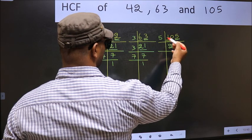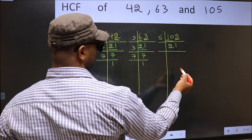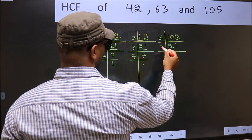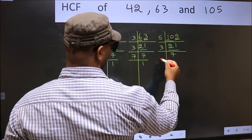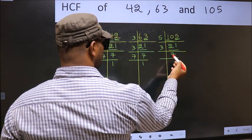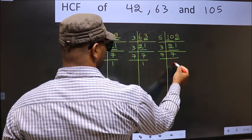Now we have 21, 21 is 3, 7 is 21. Now 7, 7 is a prime number, so 7, 1 is 7.